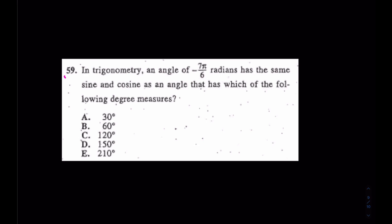Come with me over here to this one. This one's a little bit more tricky. It is number 59 though. Really, they think this is the second hardest question on the ACT, but not for us. What's happening here? Well it says in trigonometry an angle of -7π/6 radians has the same sine and cosine as an angle that has which of the following degree measures.